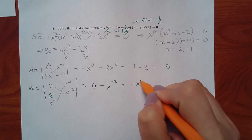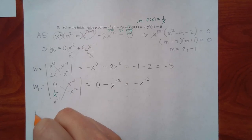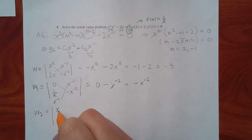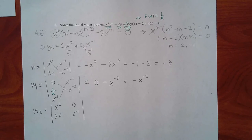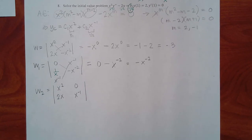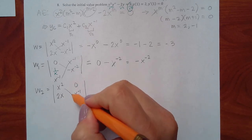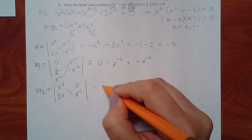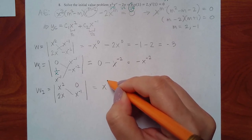Continuing to find u1 and u2 by integrating W1/W and W2/W respectively. The e to the 2x terms from Wronskians cancel nicely. For W2 over W: 2x to the fourth plus x squared over x to the fourth splits into 2 plus x to the negative 2, and when you add exponents: 2 plus negative 1 gives x to the positive 1 for the second term.